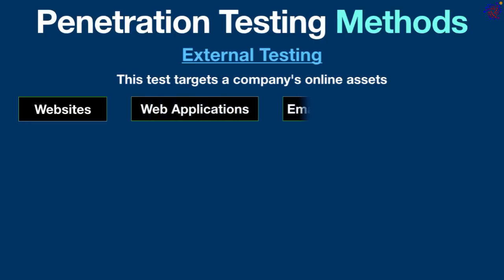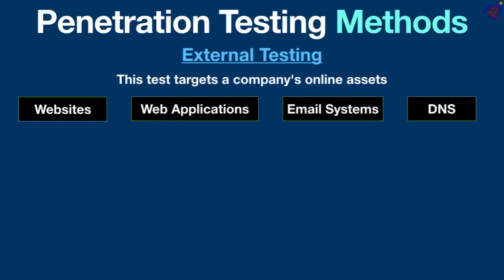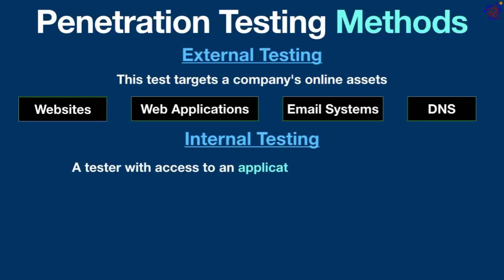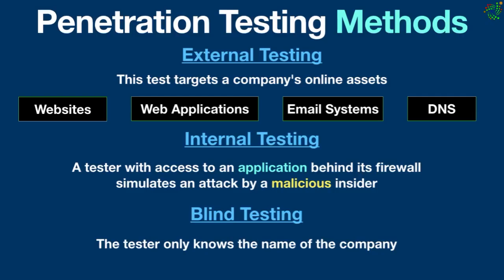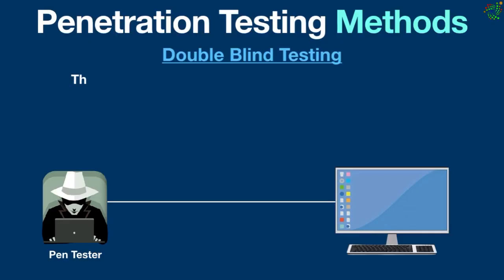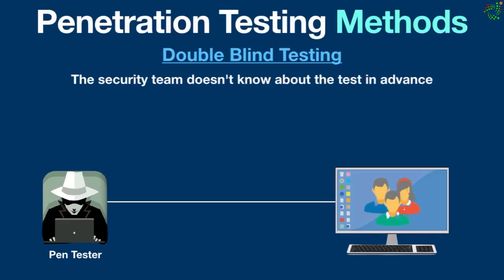Penetration testing methods include several types. External testing targets a company's online assets such as websites, web applications, email systems, and domain name servers, with the goal of breaking in and stealing valuable data just like a real hacker would. Internal testing simulates an attack by a malicious insider — for example, an employee's account being compromised through a phishing attack. Blind testing gives the tester only the company's name, simulating a real attack and showing how the security team responds in real time. In double blind testing, the security team doesn't know about the test in advance, showing how well they can handle unexpected attacks.